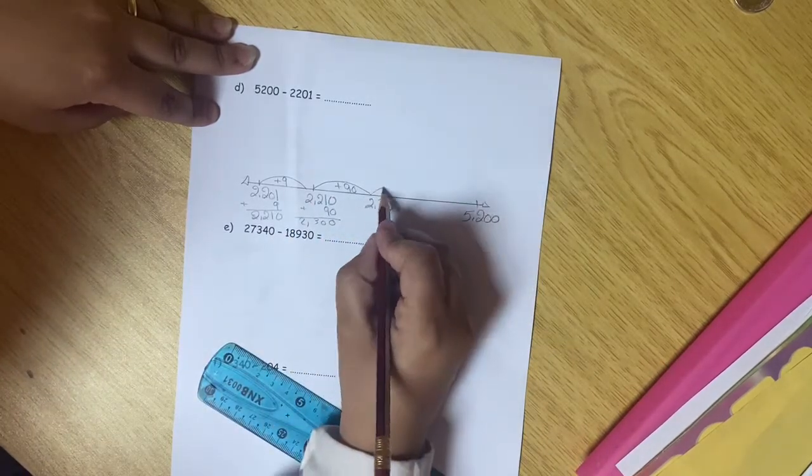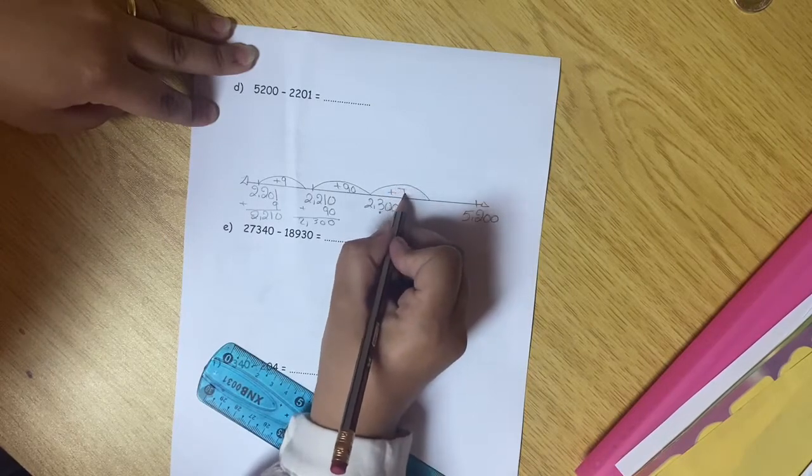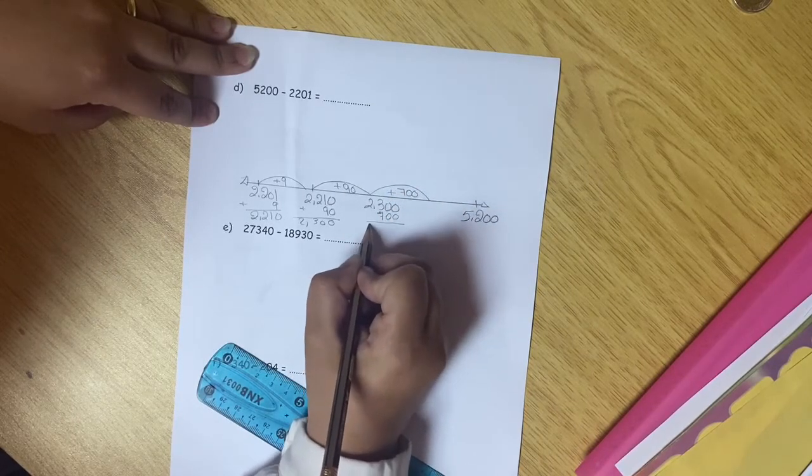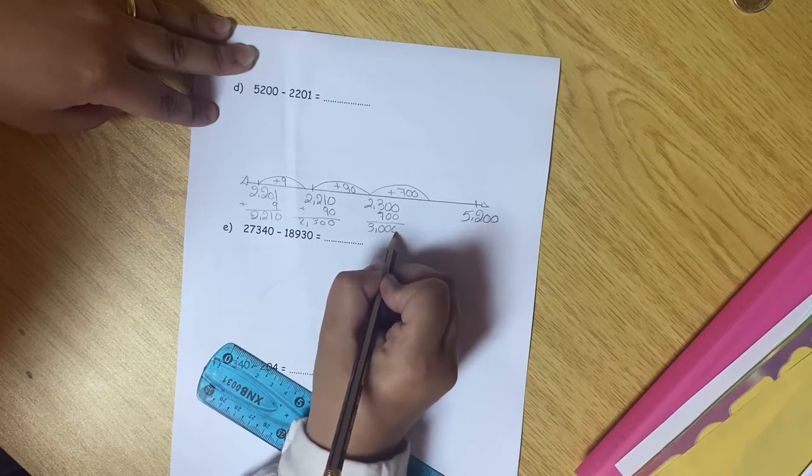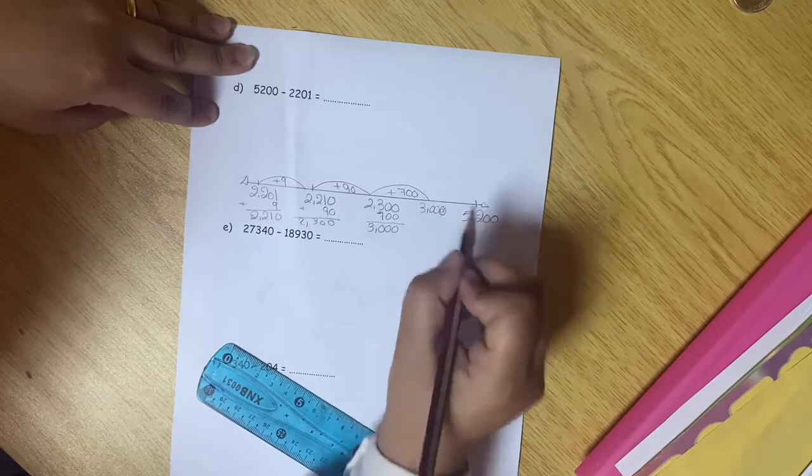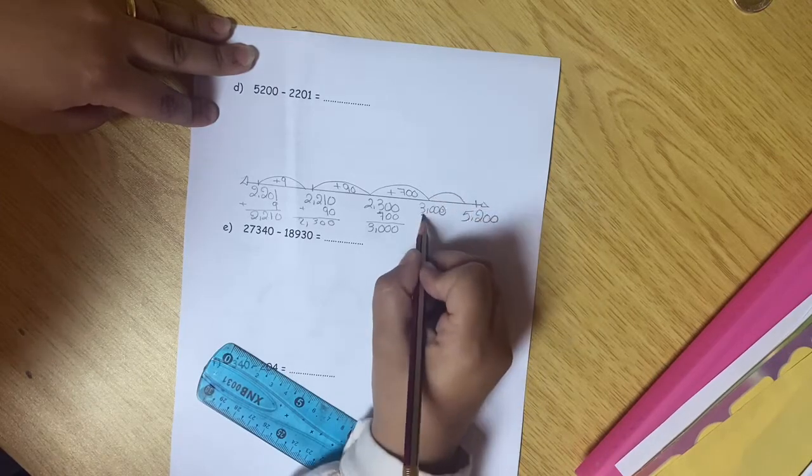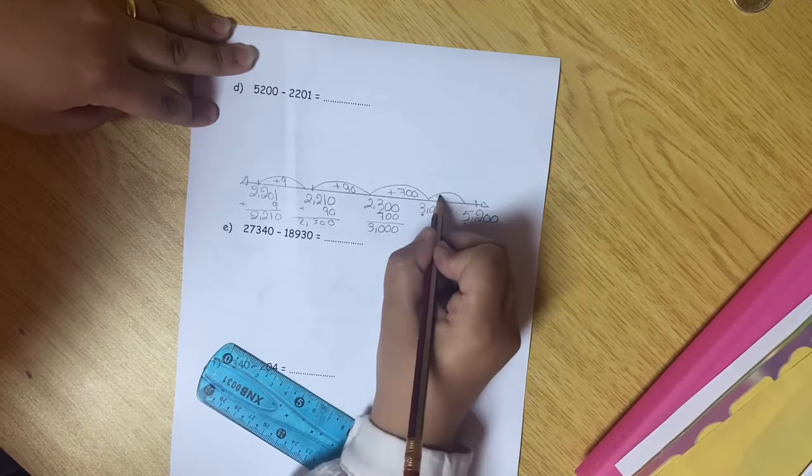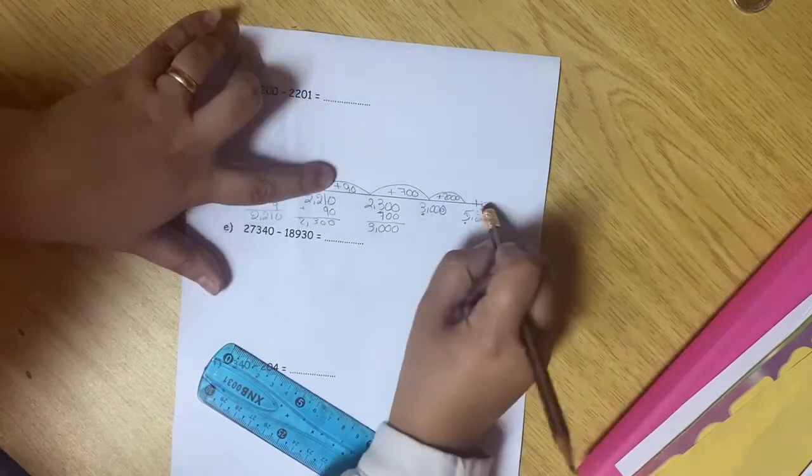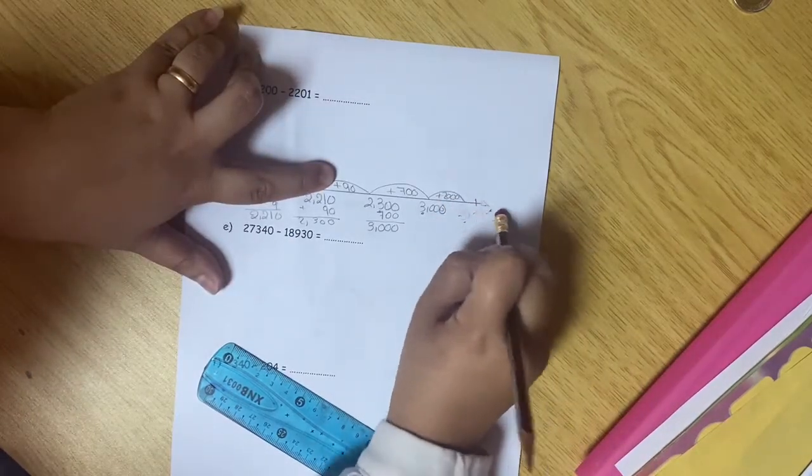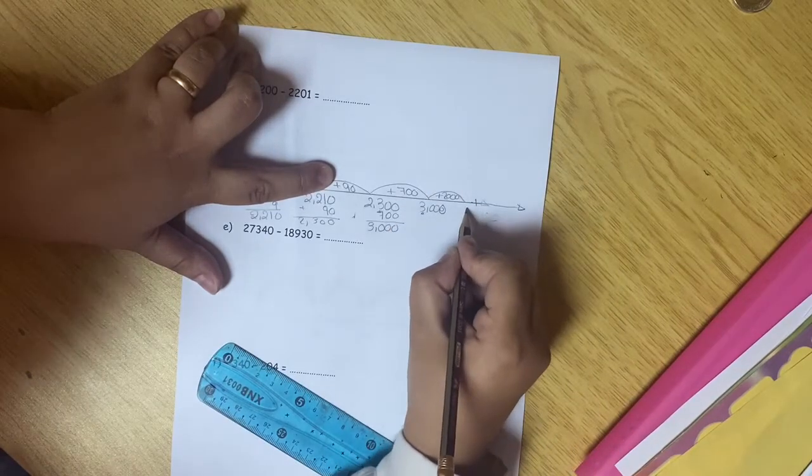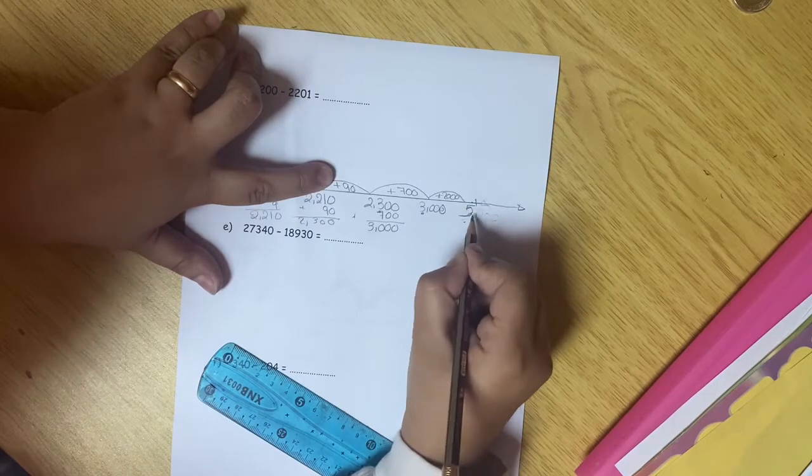Then, the 3 in the 100s, I wanted to reach perfect 100, so it will be plus 700. Here. Then, this 3 wants to reach to 5, so it will be plus 2,000. That will be 5,000.